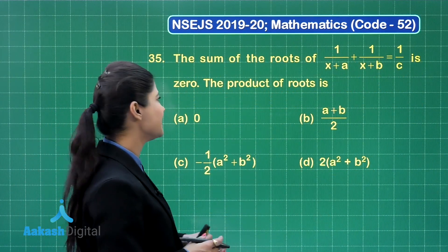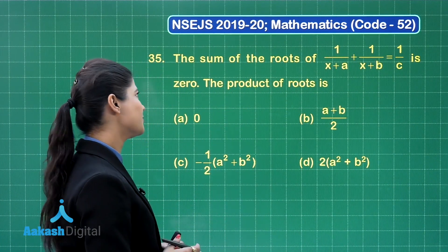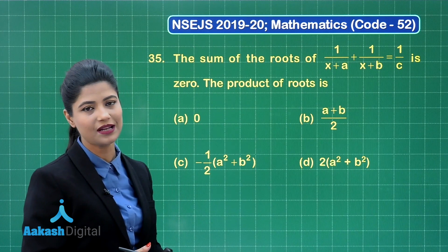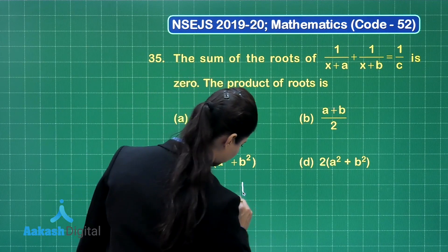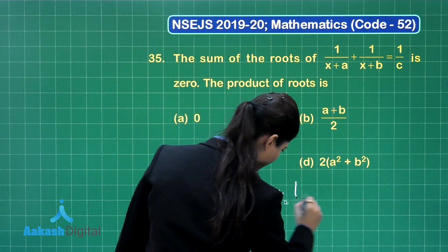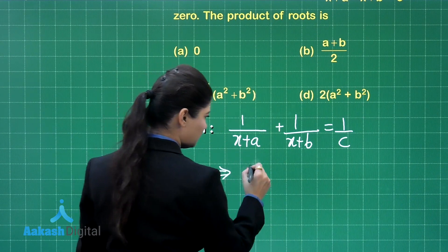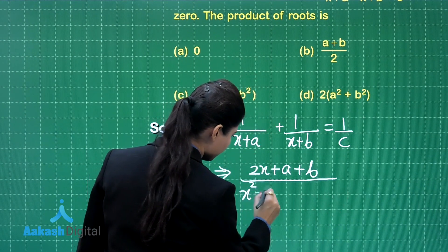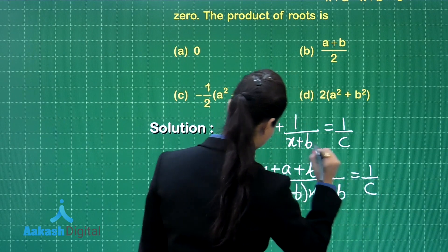Here we have question number 35. It states that the sum of the roots of the equation 1 upon (x plus a) plus 1 upon (x plus b) equals 1 upon c is 0. The product of the roots is to be found. This quadratic equation is not yet in quadratic form, so we first simplify it. Taking LCM gives (2x plus a plus b) upon (x² plus (a plus b)x plus ab) equals 1 upon c.